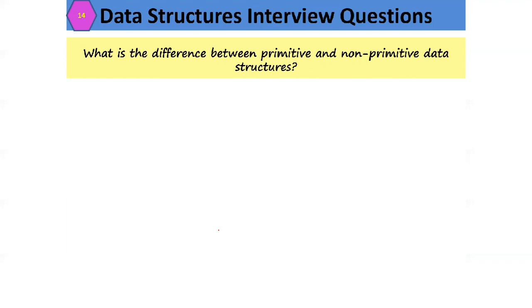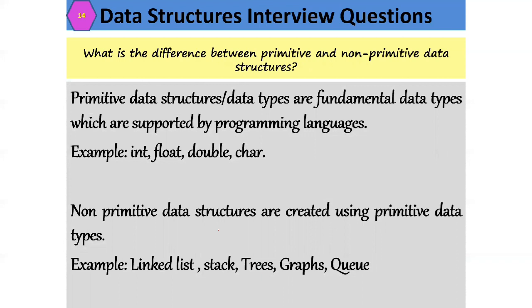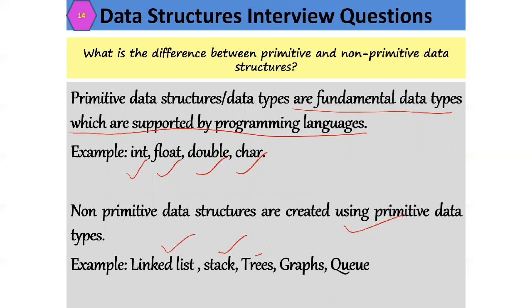What is the difference between primitive and non-primitive data structures? Primitive data structures, also called basic data types, are the fundamental data types supported by programming languages — for example, int, float, double, char. These are built-in and come along with the programming language. Non-primitive data structures are created using primitive data types — examples include linked list, trees, graphs, queues. These are the ones you create yourself.